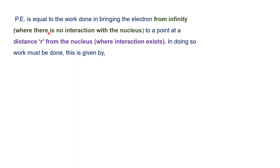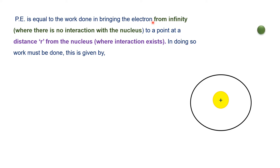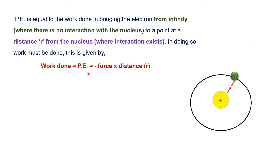The potential energy is equal to the work done in bringing the electron from infinity. Infinity here means the electron is present at a point where there is no interaction between electron and nucleus, and this electron is brought to a point where interaction exists between the electron and nucleus. For this process, work is done that is equal to potential energy, and that has the formula: minus force divided by distance.